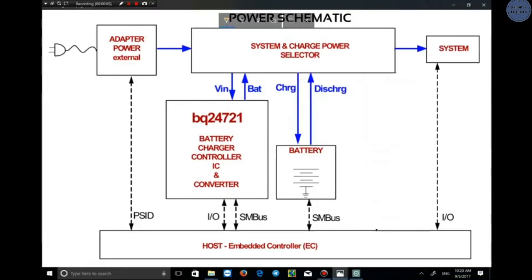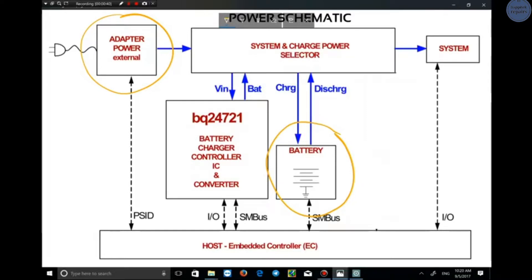In this video I want to talk about the power block in the schematics. The power block of all laptops is divided into some separated parts. In this schematic, there is an adapter, which means the laptop has two power supplies: one is the adapter and the other is the battery. The adapter has two obligations: it converts AC power to the required DC of the laptop and also charges the battery.